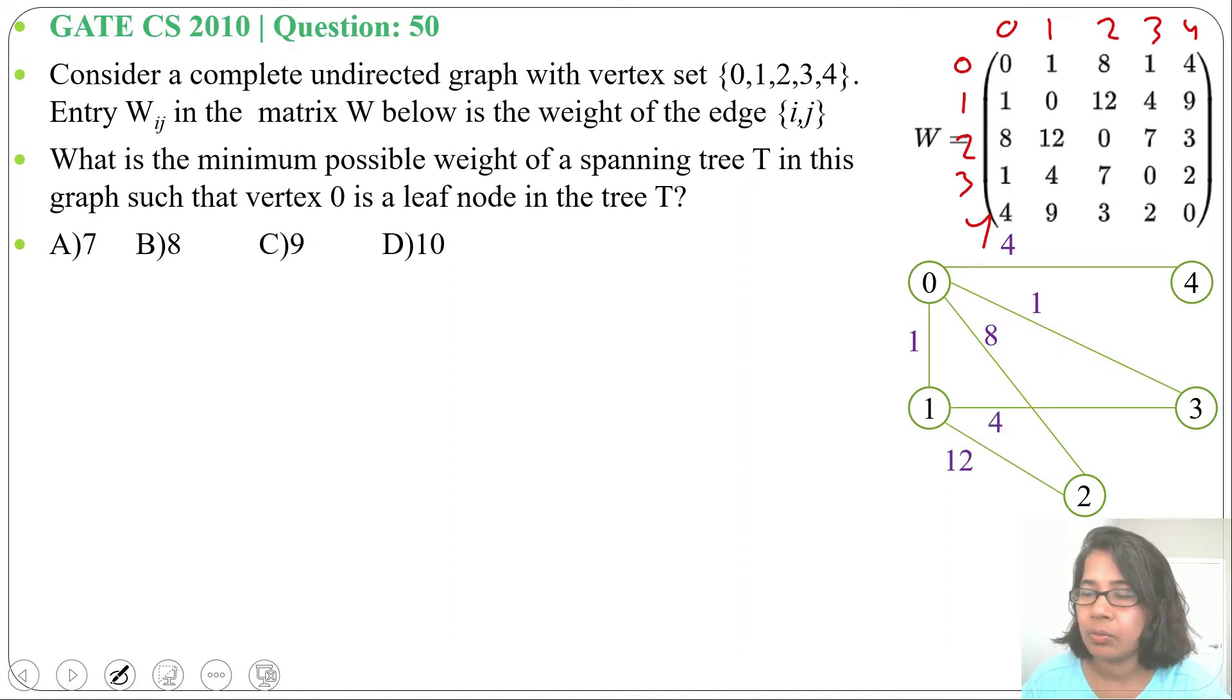Next for vertex 2, from vertex 2 to vertex 3 weight is 7, 2 to 4 weight is 10. From vertex 2 to vertex 4 weight is 8.